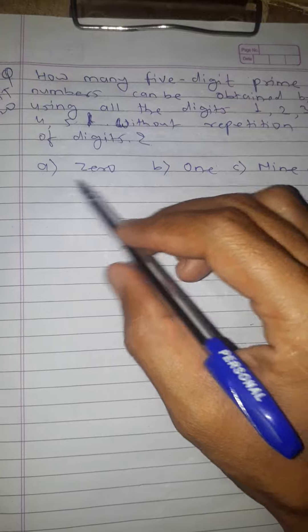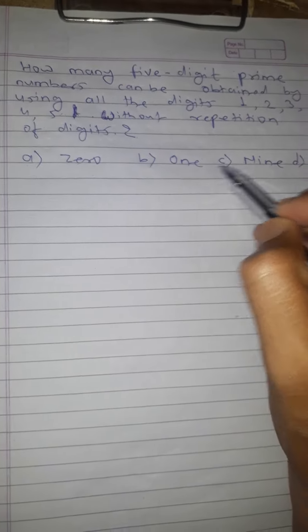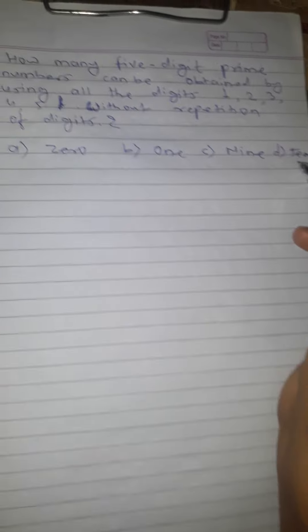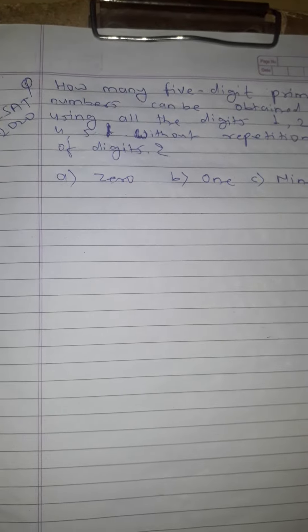The options given are: (a) zero, (b) one, (c) nine, and (d) ten. First of all, we need to know about prime numbers.